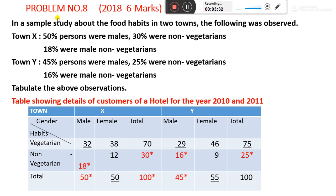Next is problem number 8, which is a continuation. This question is from the 2018 question paper, worth 6 marks. In a sample study about food habits in two towns, the following was observed. Town X: 50% of persons were male, 30% were non-vegetarian, and 18% were male non-vegetarian. Tabulate the above observations.